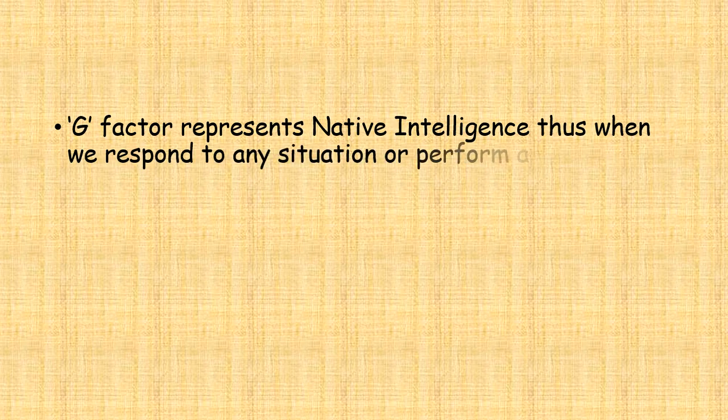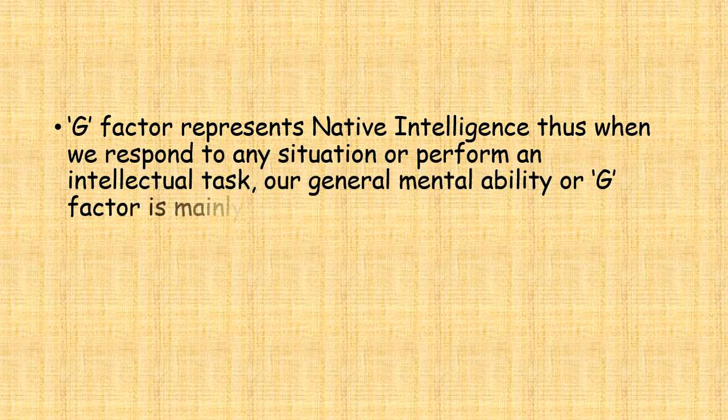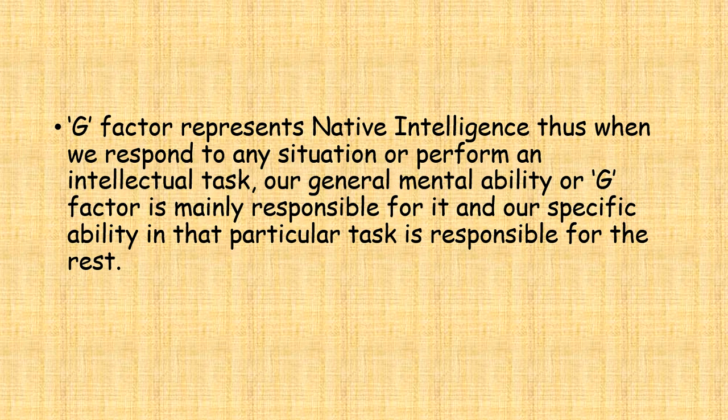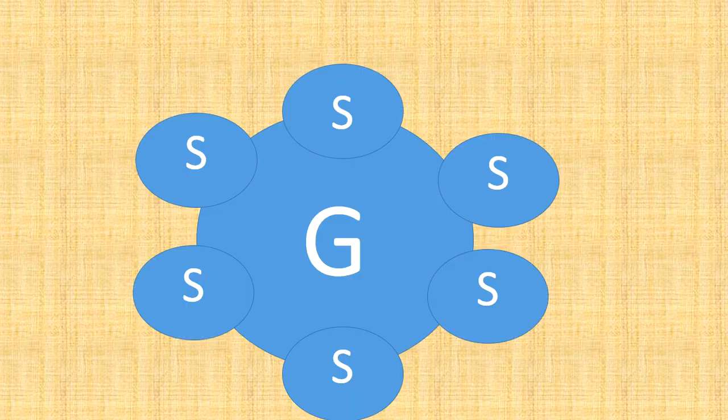G-factor basically represents native intelligence that we require to do any situation. Specific factor is what we learn to do certain tasks. There is one G-factor, and there are S-factors. S-factor is special skills that we learn, like if we want to learn singing, then we will be good at singing.